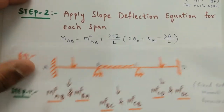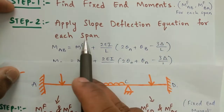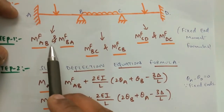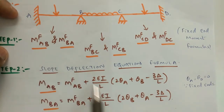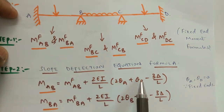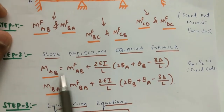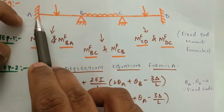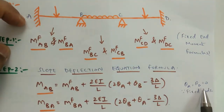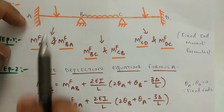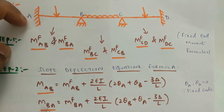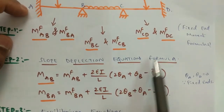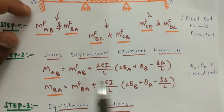Next, in the second step, you have to apply the slope deflection equation for each span using these formulas. For each fixed end moment value and based upon the length of the span, substitute the values in the slope deflection equation formula. Here, fixed supports are at A and D, so theta_A and theta_D values will be zero. For each span, you apply MAB, MBA, MBC, MCB, MCD, and MDC — six equations in total from step 2.